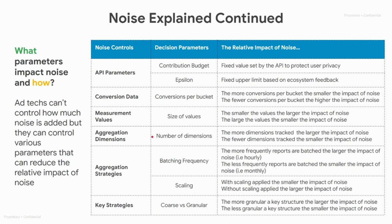Next, we have number of dimensions. The more dimensions being tracked, the larger the impact of noise. If you are tracking many dimensions, you are more likely to have fewer conversions per bucket, which ties into conversions per bucket and key strategies.